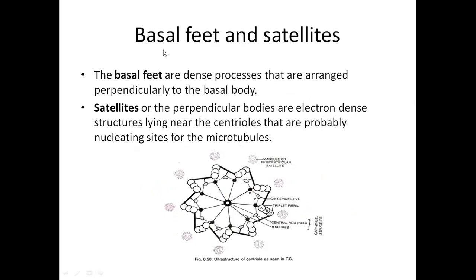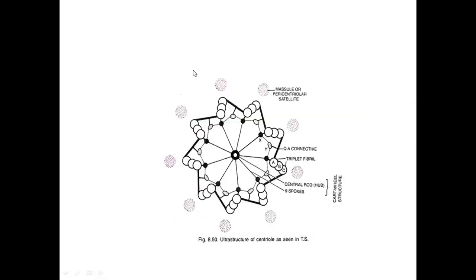Along with these structures, the centrioles also consist of basal feet and satellites. At the circumference area of the cylindrical structures there is presence of pericentriolar satellites — these are perpendicular, electron-dense structures lying near the centrioles. They are probably the nucleating site for microtubules. During cell division the origin of spindle fiber microtubules is from these satellite bodies.